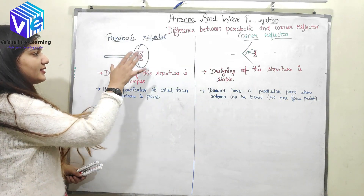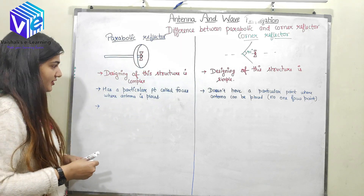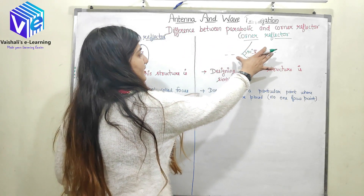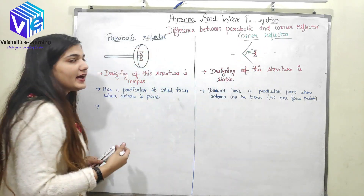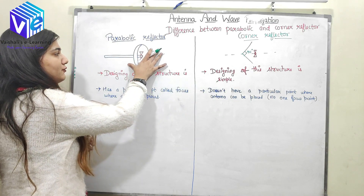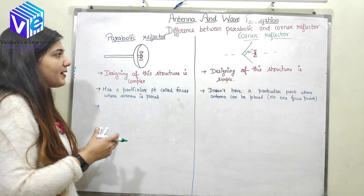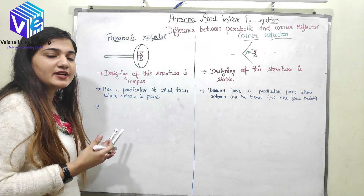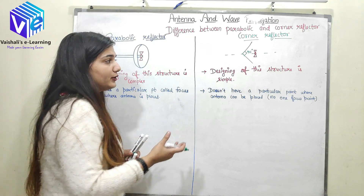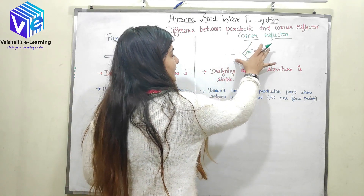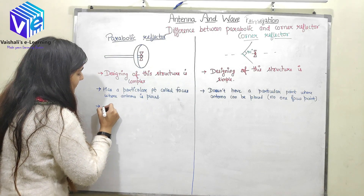The third point is that the parabolic reflector is used when a large aperture is needed — it contains a very large aperture, and it is a comparatively big structure. When size is not a constraint, you use the parabolic reflector. The corner reflector has a very small aperture and is used when a small antenna is needed. You may have seen the parabolic dish reflector in a TV dish antenna. Corner reflectors are very small, comparable to the wavelength of the radiation, so small they can barely be seen.